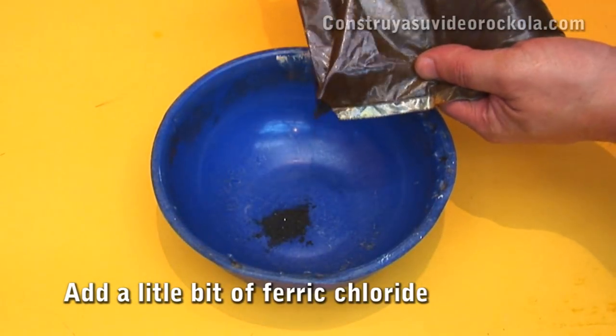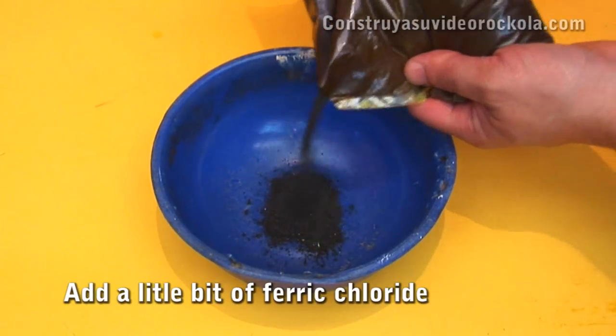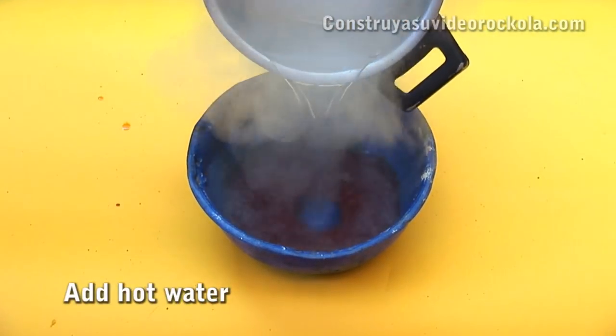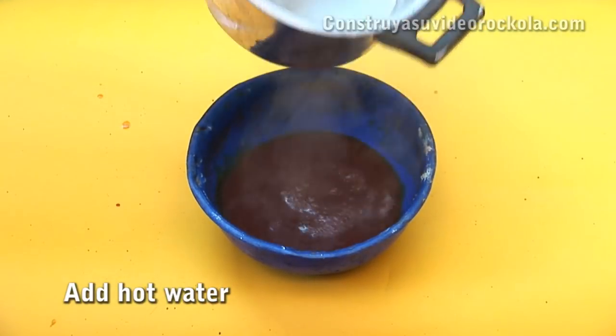In a plastic container, add a small amount of ferric chloride. We add hot water. Be careful, this is corrosive. We immerse the bakelite.